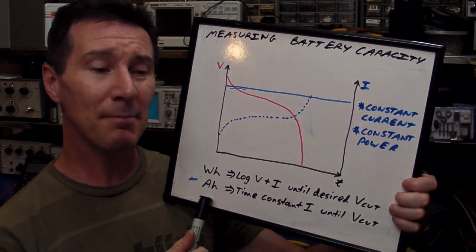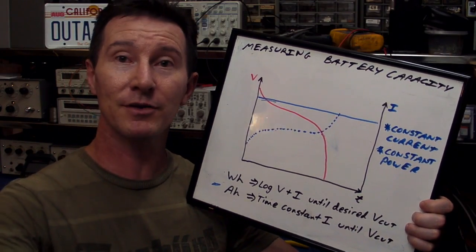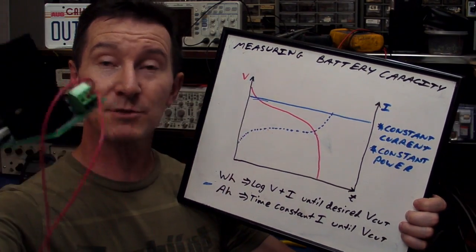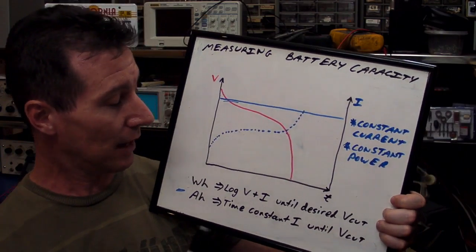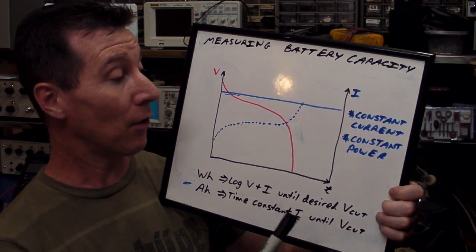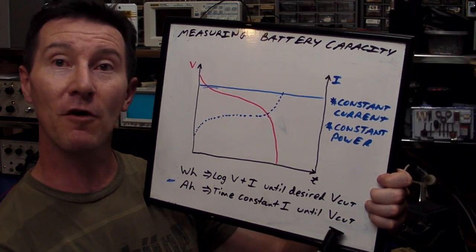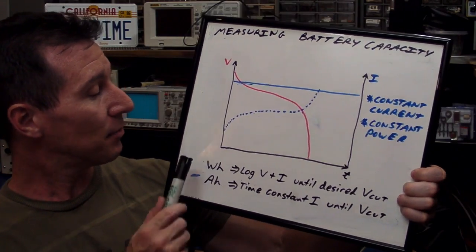As you'll see, to measure watt-hours is a bit more complicated. It requires a bit more gear than a simple amp-hour measurement. Just to measure amp-hour, all you need is a constant current like this constant current load which I used in the previous vlog. Very simple to build, quite trivial. All you need is a stopwatch to time it and a multimeter hooked across the battery to determine the cut-out voltage, which we'll call V-cut.